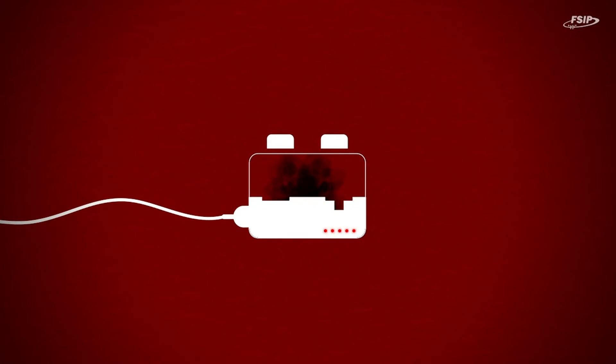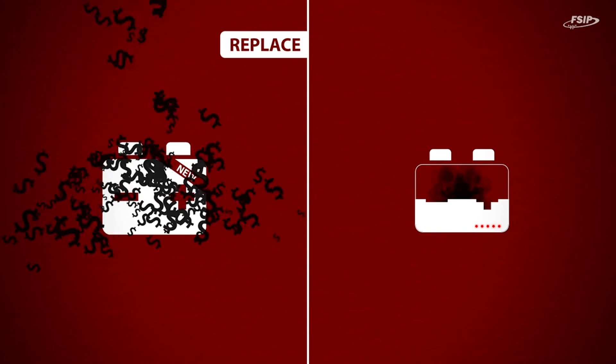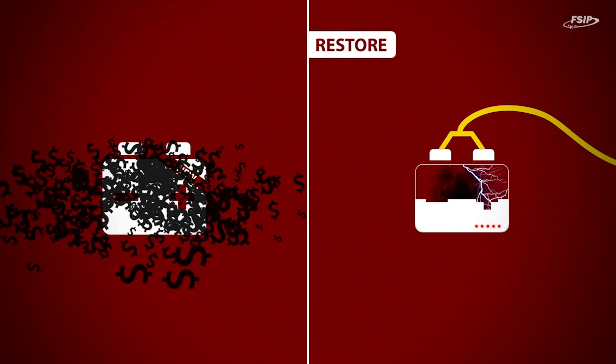There are two possible solutions for malfunctioning batteries. You can either replace the old battery, but this is very expensive and not environmentally friendly. Or, you can desulfate it and give it a second life with our extender technology.